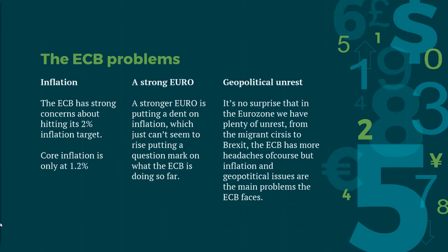Finally, we also have geopolitical unrest or risks. It's no surprise that in the eurozone we have plenty of unrest — from the migrant crisis to Brexit, the ECB has plenty of headaches. Of course there are much more issues than just inflation, the migrant crisis, and Brexit. There is so much more on the ECB's plate, but generally inflation, a stronger euro, and geopolitical risks are the main problems the ECB is facing right now.